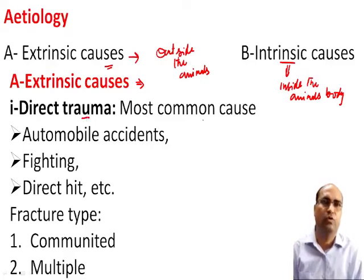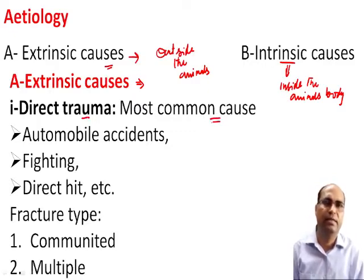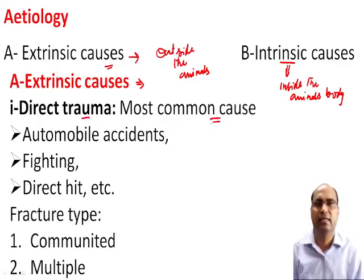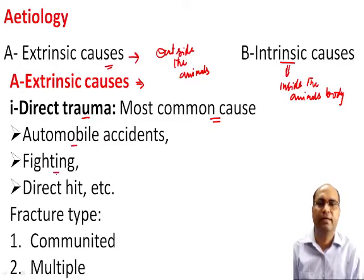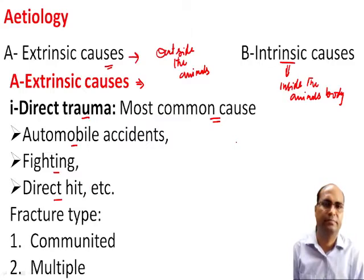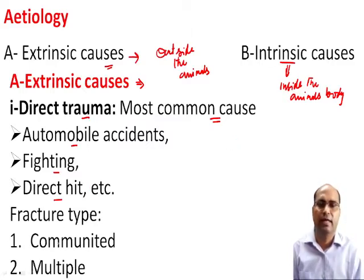Direct trauma is the most common cause of fracture in animals as well as in human beings. These direct traumas are commonly caused by automobile accidents and fighting. Under direct trauma there may be communitary or multiple fractures.